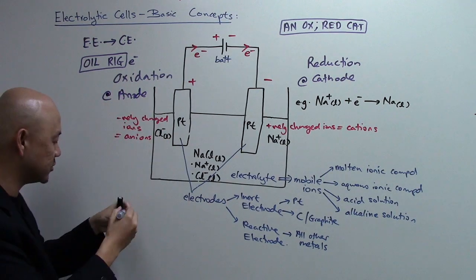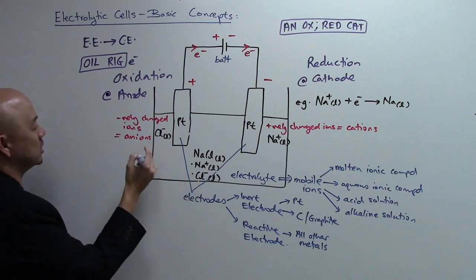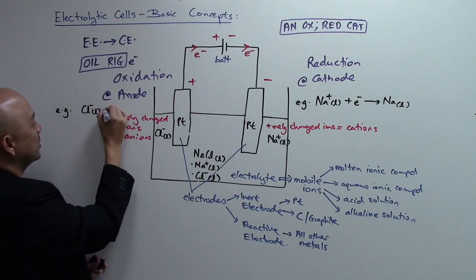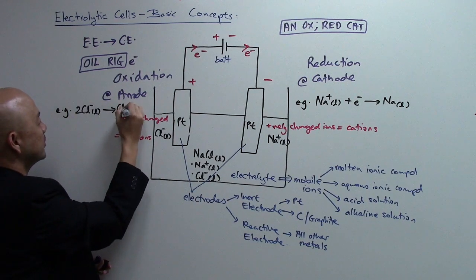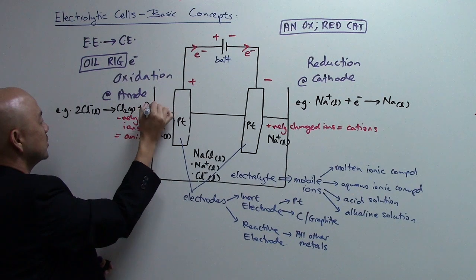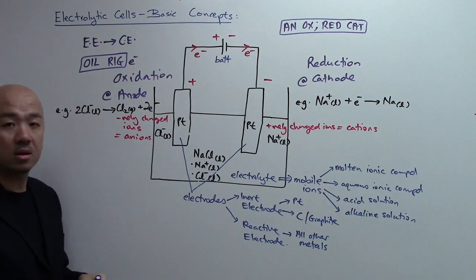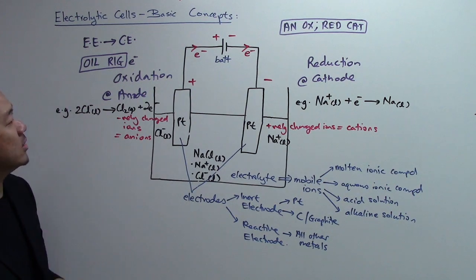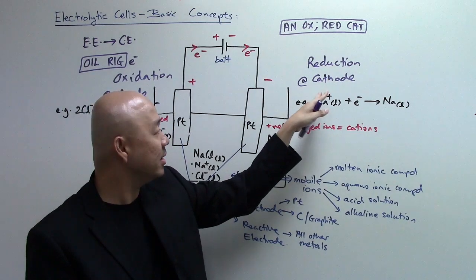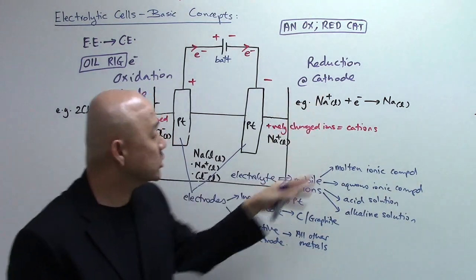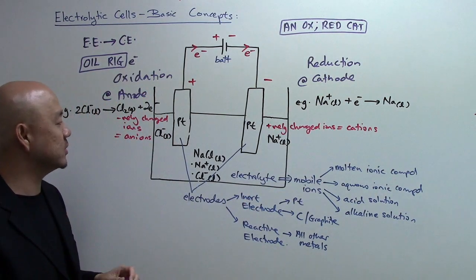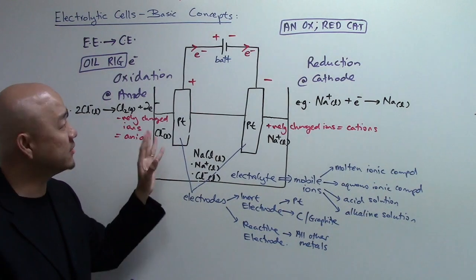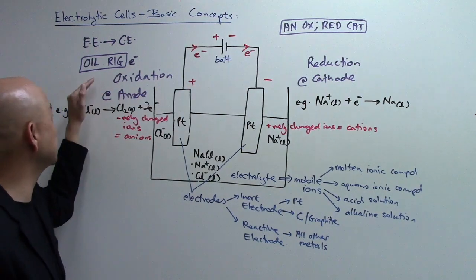The half-equation at the anode is: 2Cl⁻ → Cl₂ (gas) + 2e⁻, and the electrons travel up towards the battery. So oxidation occurs at the anode, and reduction occurs at the cathode. This lets you identify which side is the cathode and which is the anode. Remember: AN OX RED CAT, and OIL RIG — these are very useful.